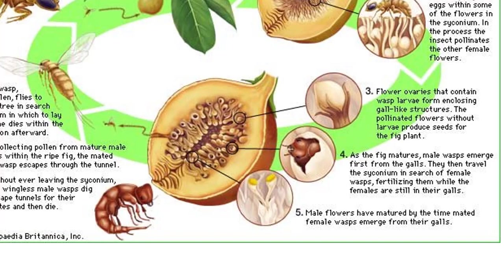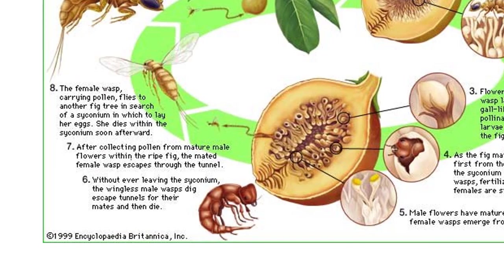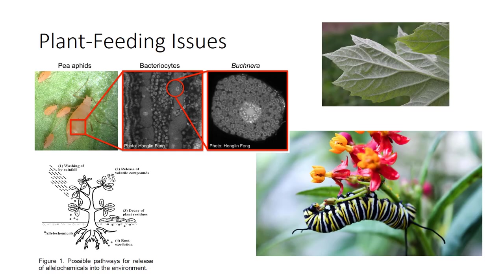The male wasps emerge first from the galls, fertilize the females while in the galls, and dig escape tunnels for their mates and die. In the edible fig, the mom and the male babies are digested as protein. Are the crunchy parts of figs pieces of wasps? No, they are actually just seeds.